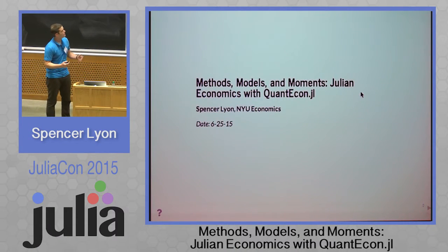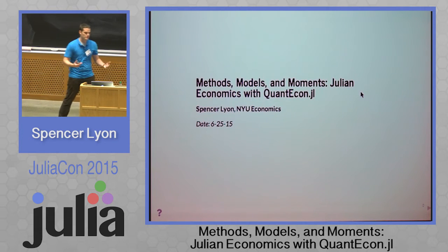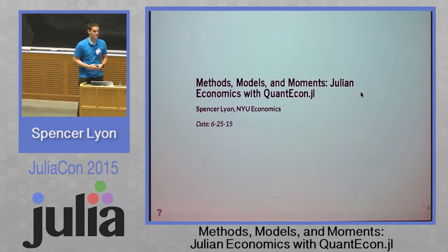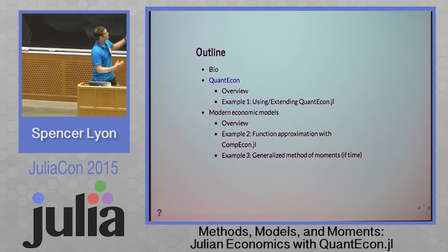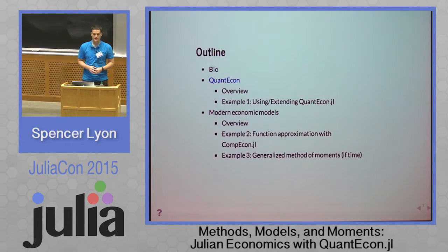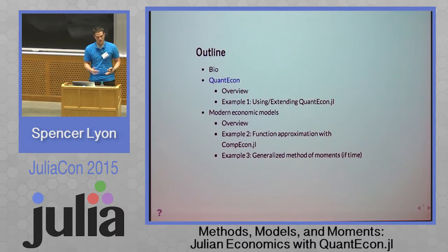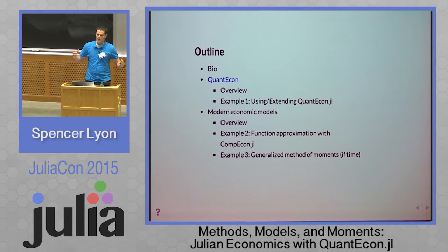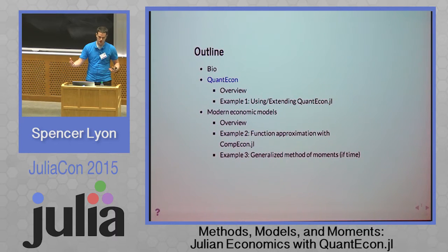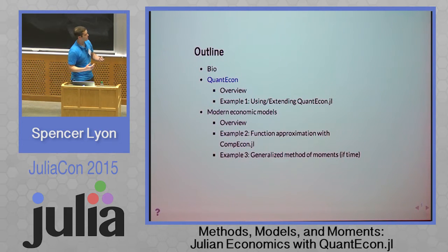My name is Spencer Lyon. I'm here to talk about the work I do with Julia and applying it to my economics research. I'll give you a brief sketch of what we're going to talk about. I'll quickly give a bio about myself, and then I'm going to talk about a project I'm working on called QuantEcon. I'll give you an overview, then we'll do an example of how to work with that library. After that, I'll talk about what a typical modern economic model looks like, its features and characteristics, why they're difficult or easy to solve, and then we'll go over a few more examples as long as we have time.